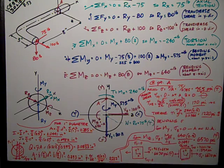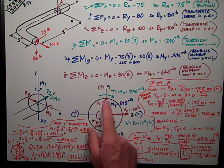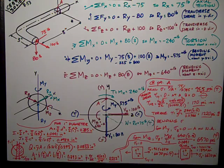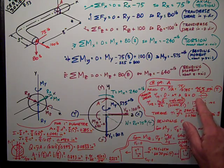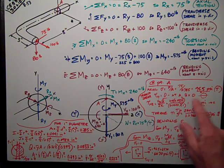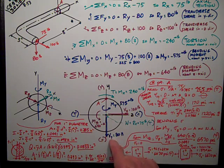For transverse shear in the y direction, A lies up there on the extreme edge, the extreme fiber as we call it. Q is equal to 0, so the shear stress due to shear in the y direction is 0.